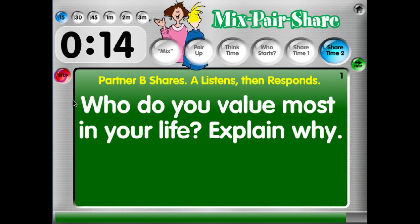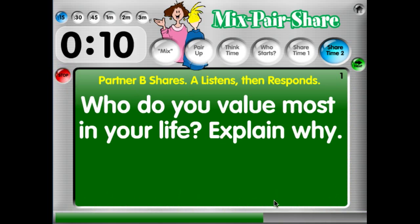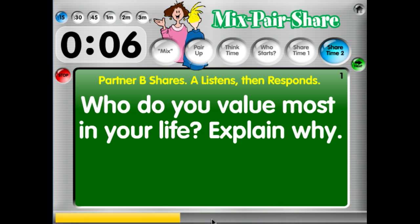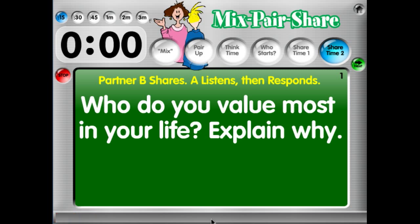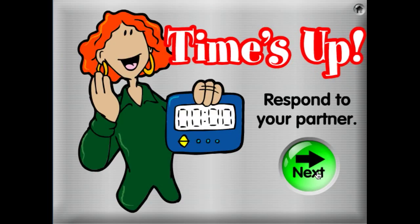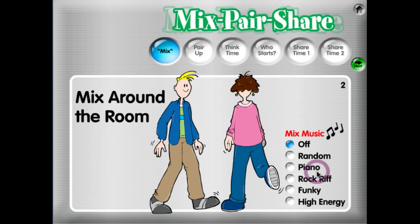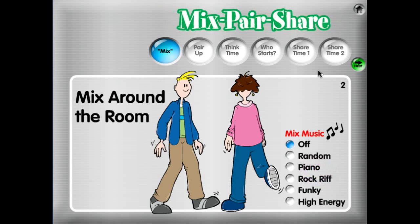Now it's Partner B's turn. We're going to go ahead and start the timer. Partner B shares for their 15-second time period. The bar turns to yellow, then to red, and we get an alarm again. We're done with that question.